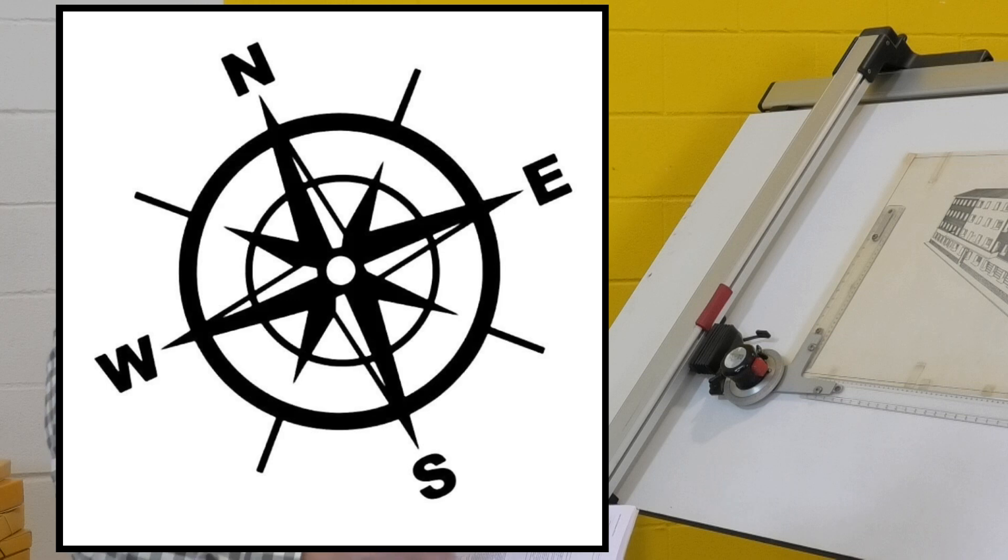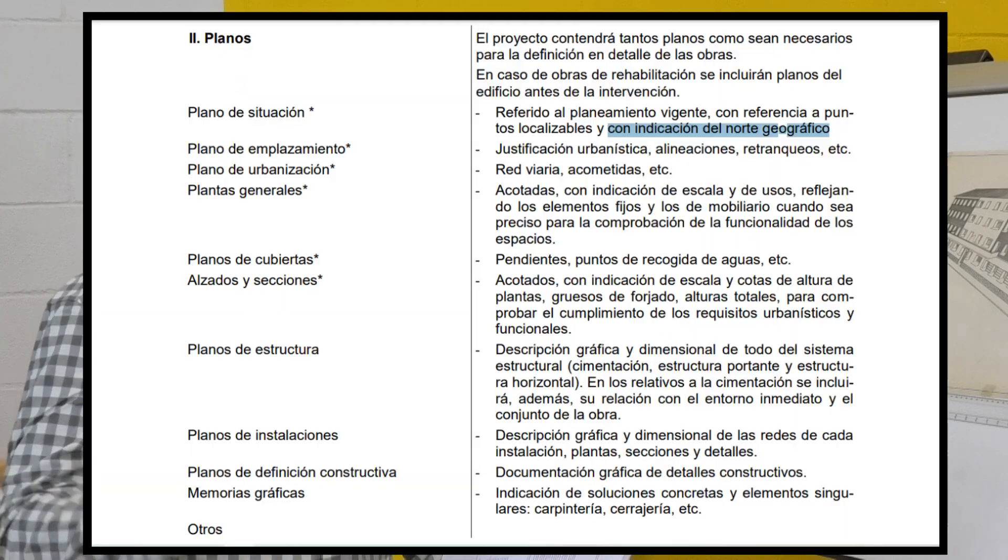Y en los planos de situación, emplazamiento, urbanización y plantas generales tenemos que hacer una indicación con la rosa de los vientos de dónde está el norte geográfico. Nos lo pide el reglamento porque esta consideración también tiene sus singularidades.